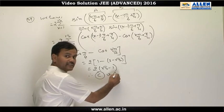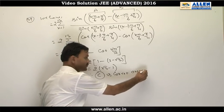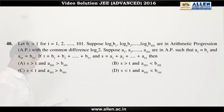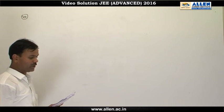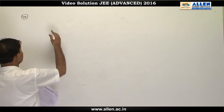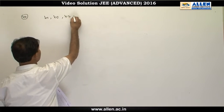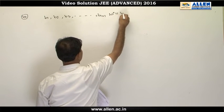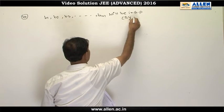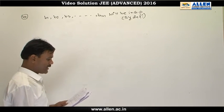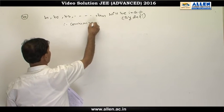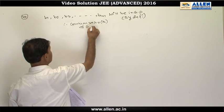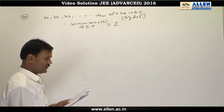Question number 40. We are given b_i > 1 for i = 1, 2, 3, …, 101, and log_e(b1), log_e(b2), …, log_e(b101) are in AP. This means b1, b2, …, b101 are in GP by definition. The common difference of this AP is log_e(2), so the common ratio r of the GP is 2.